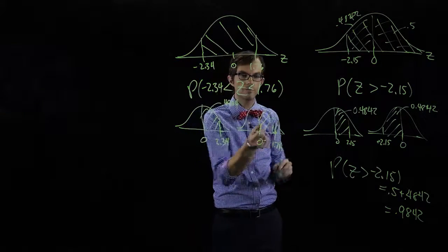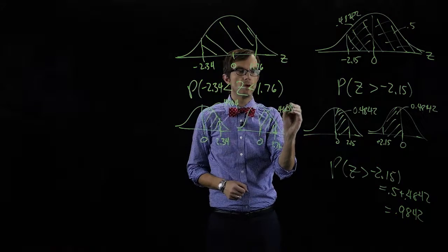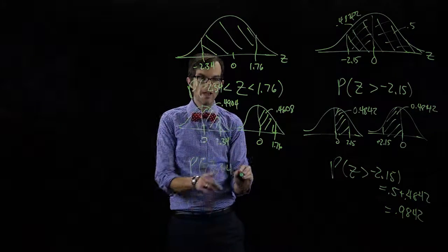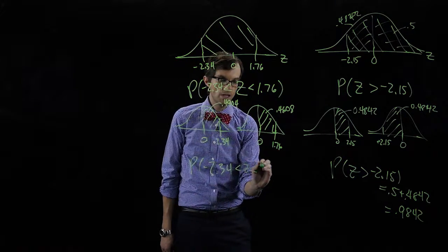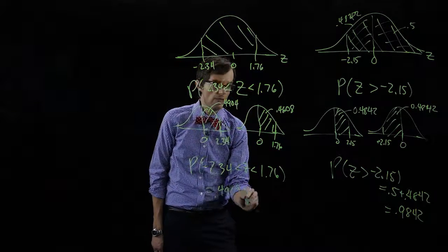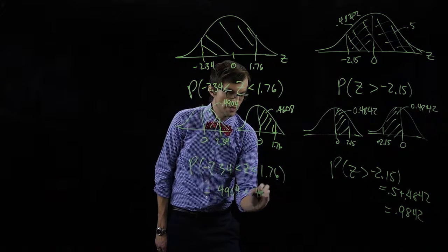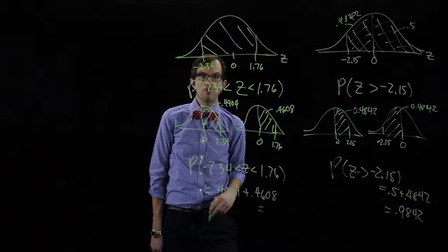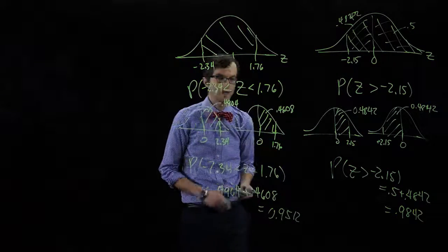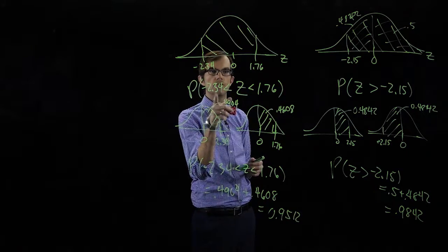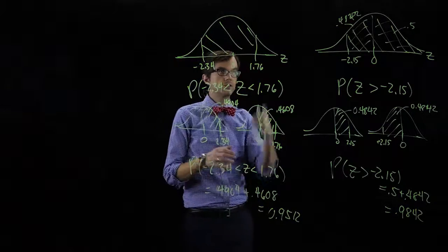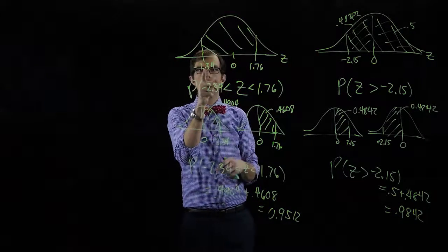If we look up the other area we get point four six zero eight. So the probability that z is between negative two point three four and one point seven six is point four nine zero four plus point four six zero eight. If we sum those two numbers we get 0.9512. The probability that z lies between negative 2.34 and 1.76 is 0.9512 — ninety-five percent of the realizations of this random variable lie between these two numbers.